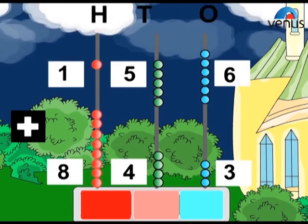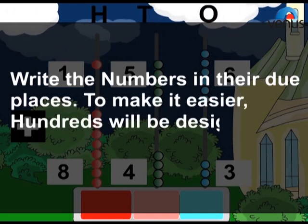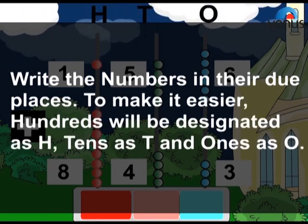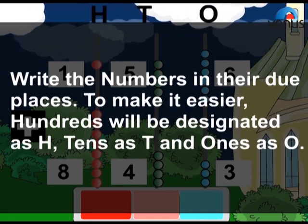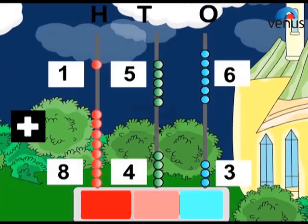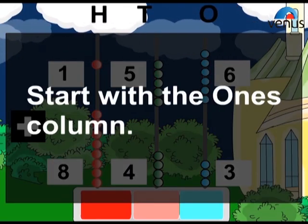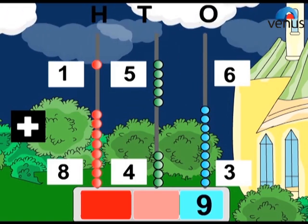Step one: Write the numbers in their due places. To make it easier, hundreds will be designated as H, tens as T, and ones as O. Step two: Start with the ones column. Steps three and four: Go to tens column and then to hundreds column.